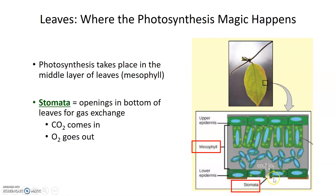The lower epidermis, or that lower layer of the leaf, has small openings or holes in the bottom. These are called stomata, and stomata are openings that allow gas exchange to take place within the leaves. Carbon dioxide gas can come in for photosynthesis, and the byproduct — oxygen gas — can come out of the stomata after photosynthesis has taken place.